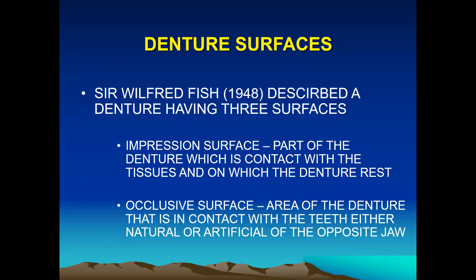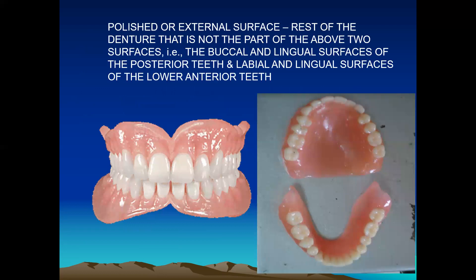Now, coming on to the different surfaces of a denture: Sir Wilfred Fish in 1948 described a denture as having three surfaces. The first is the impression surface, which is the part of the denture in contact with the tissues on which the denture rests. The second is the occlusal surface — the area in contact with the teeth, either natural or artificial, of the opposite jaw. The third is the polished or external surface, comprising the rest of the denture — that is, the buccal and lingual surfaces of the posterior teeth and the labial and lingual surfaces of the lower anterior teeth.